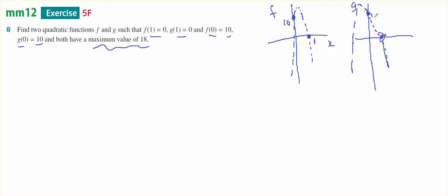Given the same two pieces of information, I've got two different graphs. But both of them have a maximum value of the turning point of 18.